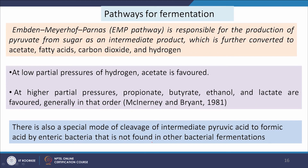Sugars, fatty acids, lipids, and amino acids are all ultimately converted to acetic acid. This conversion takes place through the EMP (Embden-Meyerhof-Parnas) pathway, which is responsible for the production of pyruvate from sugar as an intermediate, further converted to acetate, fatty acids, CO2, and hydrogen. At low partial pressure of hydrogen, acetate is favored; at higher partial pressure, butyrate and propionate are favored.